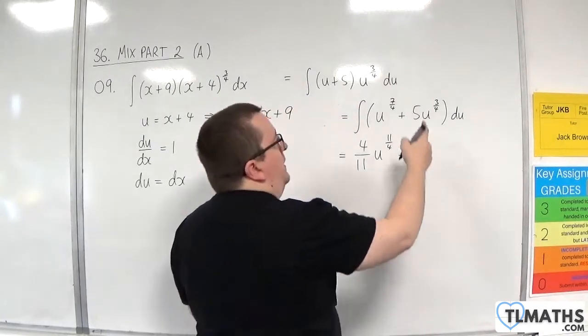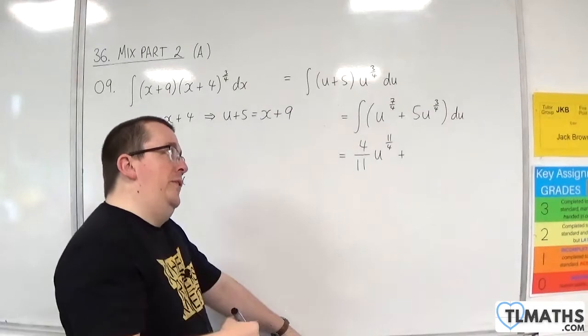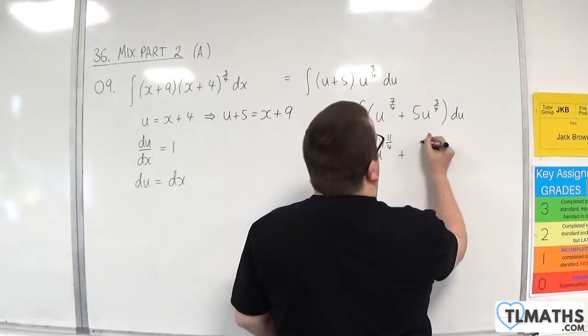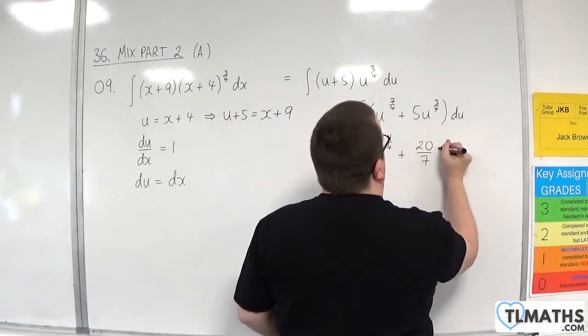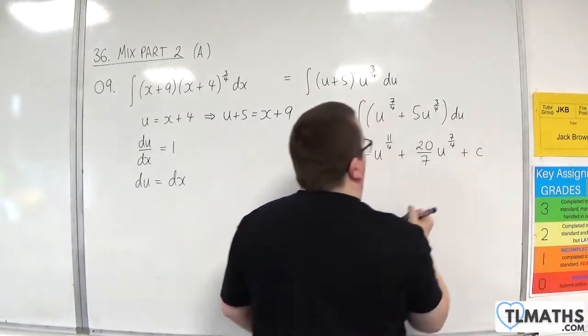Plus, now add 1 to 3 quarters, we get 7 quarters. Divide by 7 quarters is multiplying by 4 sevenths. So 5 lots of 4 sevenths is 20 sevenths u to the 7 quarters, plus a constant c.